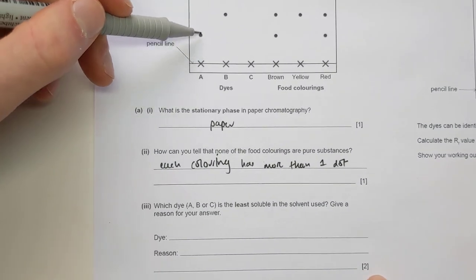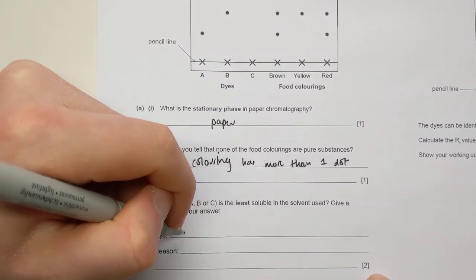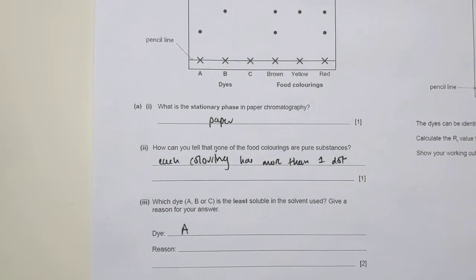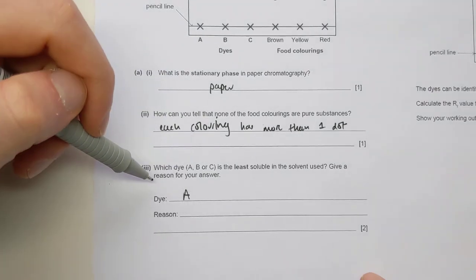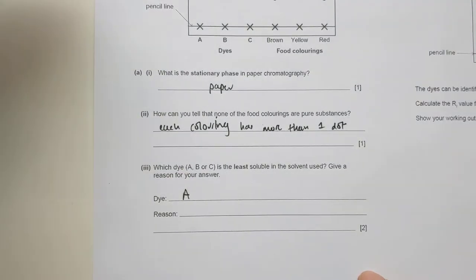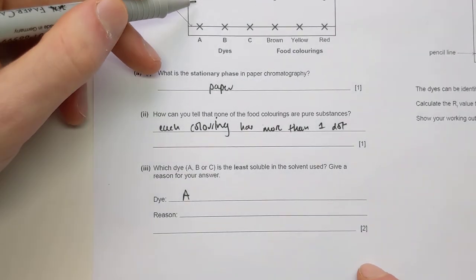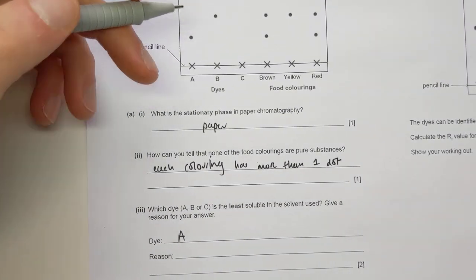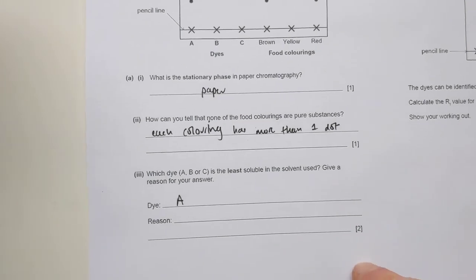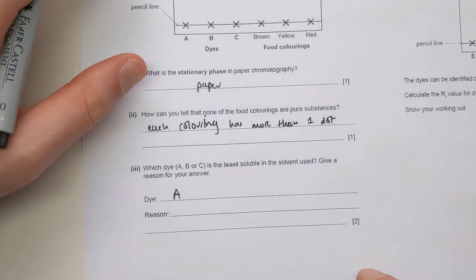So which is the least soluble in water of A, B and C? The one which is closest to the bottom would be A. That'll get you one mark. Now the second mark, you might think you need a really big detailed explanation. All it wants is a reason for your answer, which isn't the same thing as a full explanation. It's just the idea that it did not move that far up the paper or it's the least highest up the paper compared to the other two.